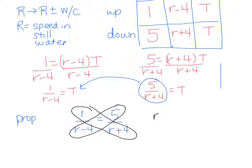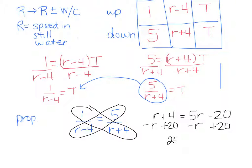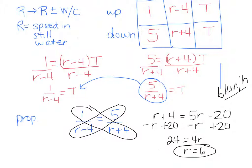So we get R plus 4 equals 5R minus 20. I'm going to add 20 to both sides, and subtract R from both sides, so I get 24 equals 4R. And so R equals 6. So the rate of the boat in still water is 6 kilometers per hour.